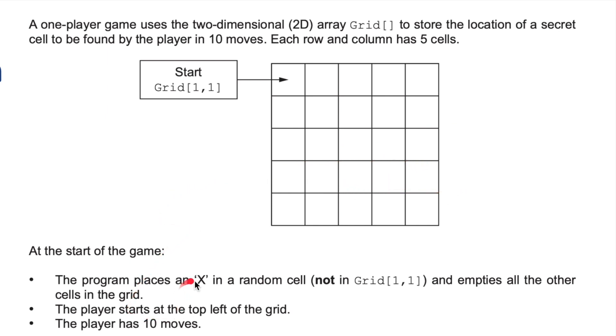At the start of the game, the program places an X in a random cell, but not in the first cell, not in 1-1, and empties all the other cells in the grid. A little bit like the game Battleships. The player starts at the top left of the grid, starts here.